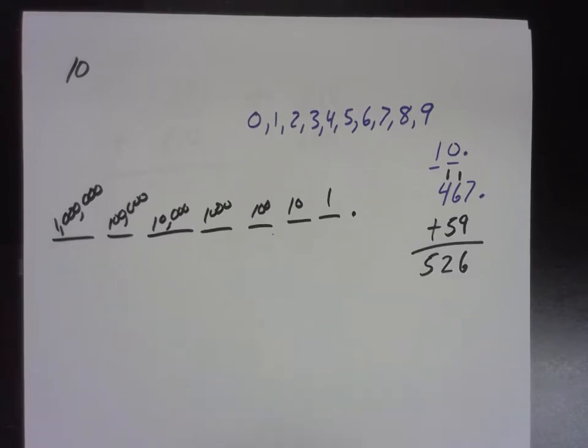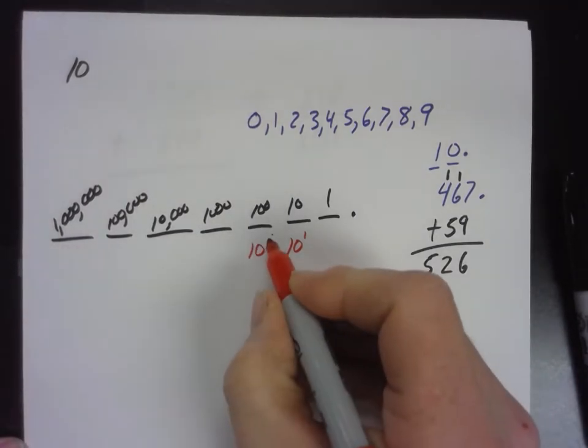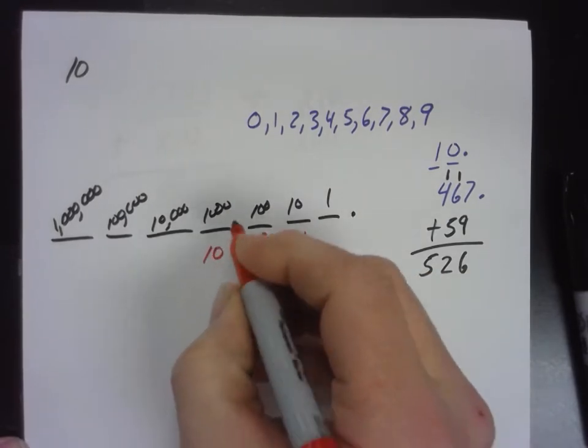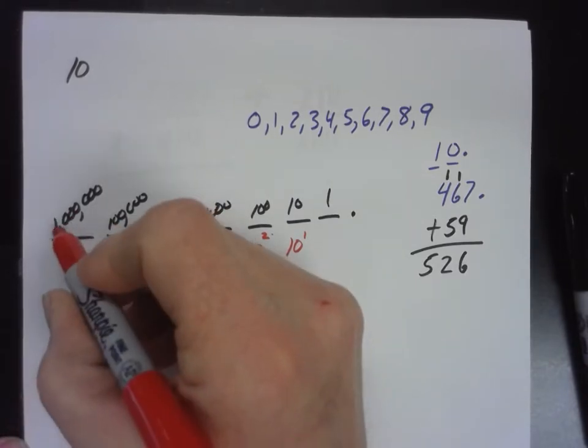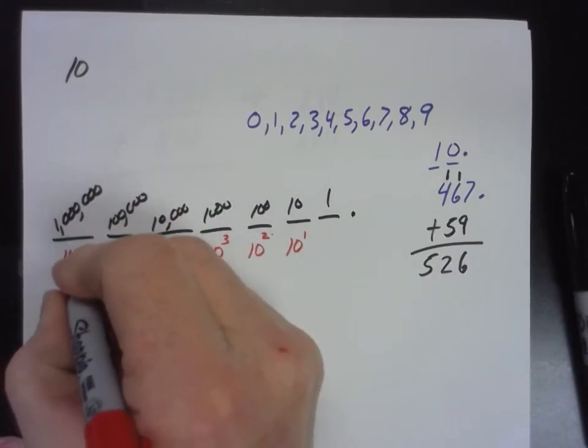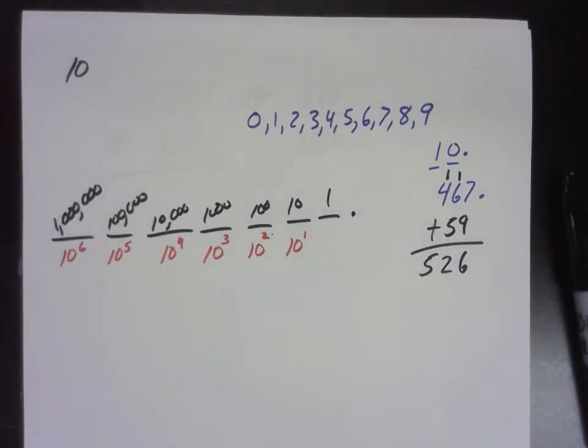So, I wanted to talk about tens with powers. I guess you guys all understand that this one is 10 to the first power. This one is 10 to the second. This is 10 to the third, 10 to the fourth, 10 to the fifth. And this has a one with six zeros, so it's 10 to the sixth. If I had a one with eight zeros, which would be 10 million, then it would be 10 to the eighth power.